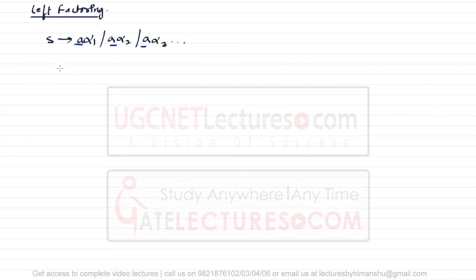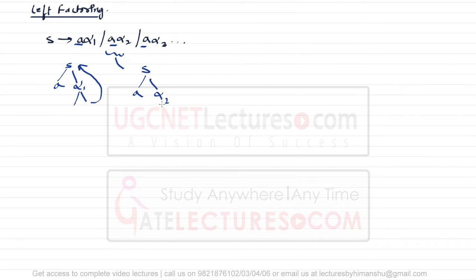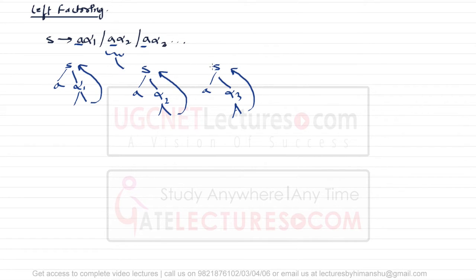When a grammar tries to generate some string, it first checks the option aα1. If by α1 we cannot generate the string, it tries aα2, and if that fails, it tries aα3, and so on. This creates an issue because you have to check all options one by one with no precise path.